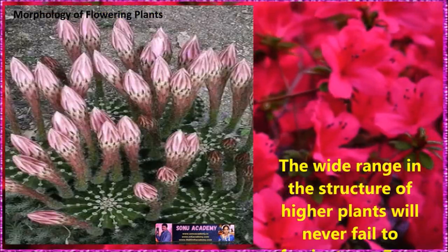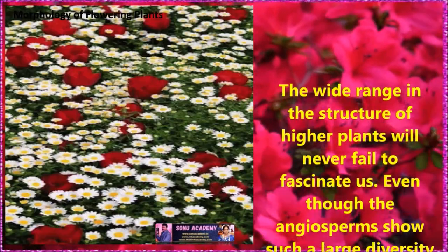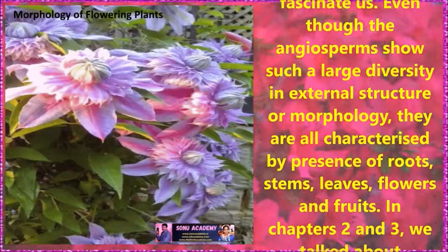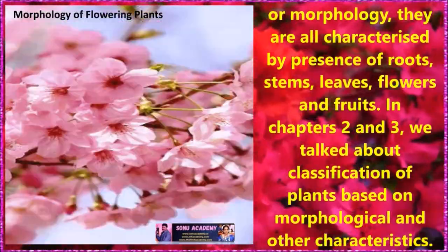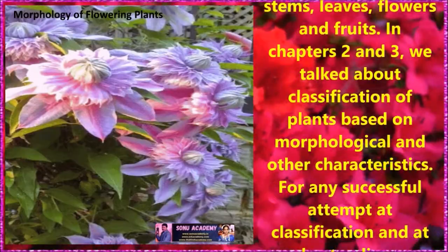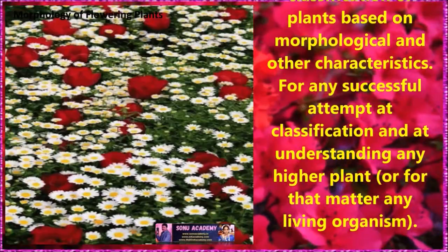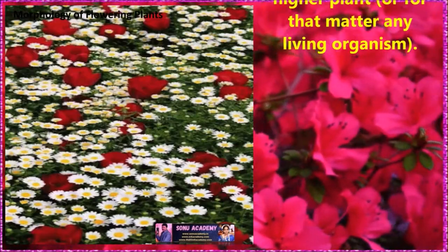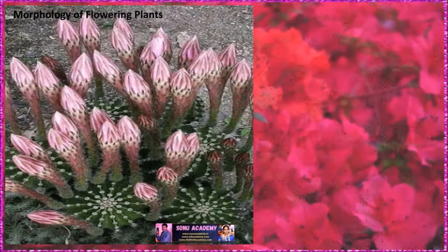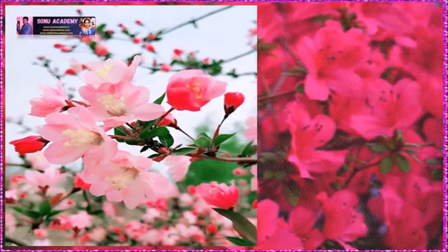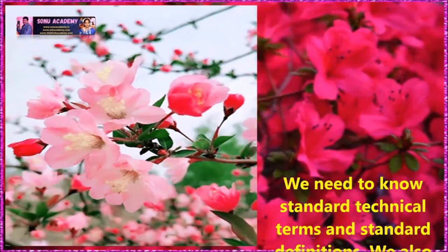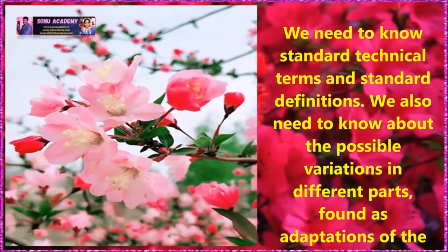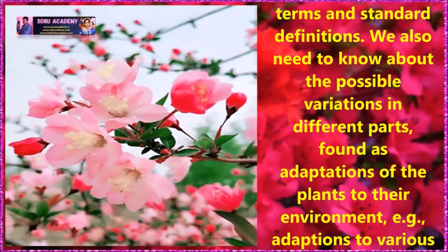Children, the wide range in the structure of higher plants will never fail to facilitate us. Even though the angiosperm shows such a large diversity in external structure or morphology, they are all characterized by the presence of fruits, stems, leaves, flowers and fruits. In chapters 2 and 3, we talked about classification of plants based on morphological and other characteristics. For any successful attempt at classification and understanding any higher plants, we need to know and understand technical terms and standard definitions.